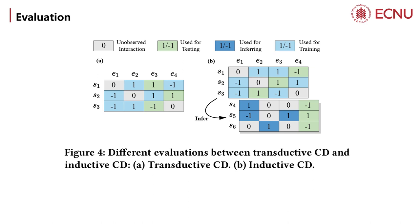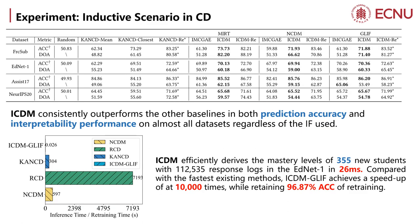In the inductive scenario, unlike the transductive scenario that splits individual students' response logs, we categorize students' response logs into two sets for training and evaluation, where the evaluation set is further split into two parts: one for inferring students' mastery levels and the other for testing. ICDM consistently outperforms other baselines on almost all datasets, and efficiently derives mastery levels of 355 new students in DNet-1 in 26 milliseconds. Compared with the fastest baseline method, ICDM achieves a speedup of 10,000 times while retaining about 97% accuracy.